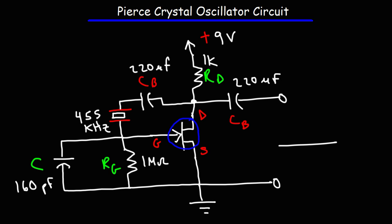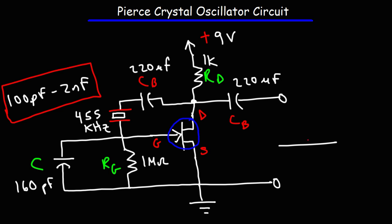This circuit doesn't work for all values of C — it only works for a narrow range. For this particular circuit with these resistances and the 9-volt battery, it ranged from 100 picofarads to 2 nanofarads. Outside of that, the circuit didn't function as well. If you use a capacitance higher than 2 nanofarads, say a 4.7 nanofarad capacitor, the circuit will fail to oscillate. If the capacitance is too low, the circuit will introduce distortion. Within this range, the circuit worked well and a nice sine wave was generated at the output.